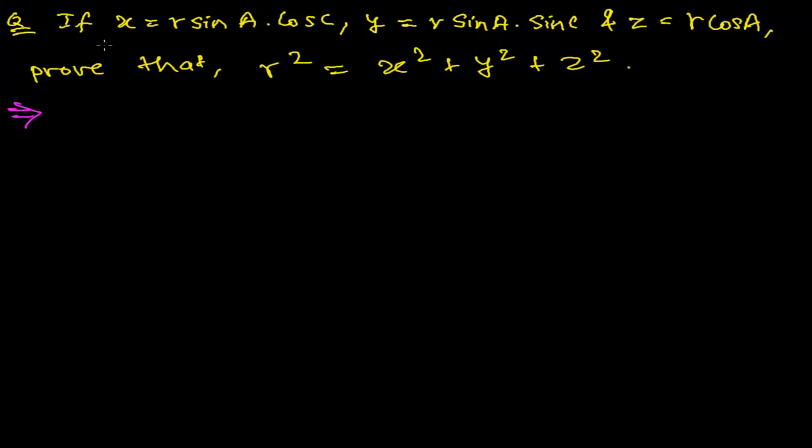Here a question is saying if X equals to R sine A times cos C and Y equals to R sine A times sine C and Z equals to R times cos C, then prove that r square equals to X square plus Y square plus Z square.